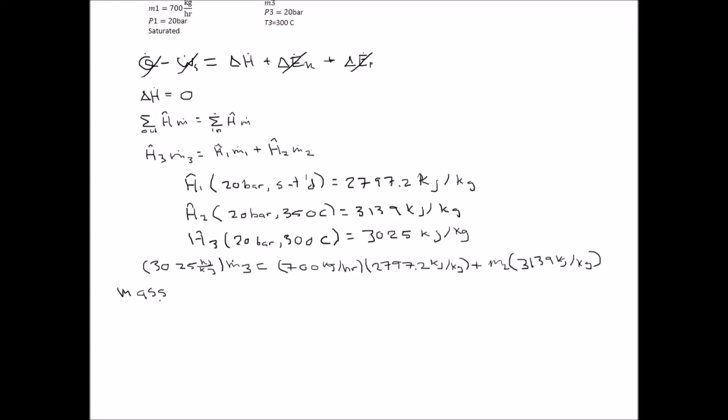In order to simplify the equation that we currently have, we need to reduce the number of unknown variables to just one. So we have to write a mass balance in order to solve for the mass flow rate of stream three in terms of the mass flow rate of stream one and stream two. This will allow us to plug our mass balance back into our energy balance and ultimately solve for the mass flow rate of stream two.